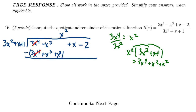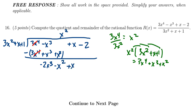Be careful here: you have a negative sign distributing. So negative x cubed minus x cubed combines to give negative 2x cubed. Then, since there are no x squared terms from the numerator, we have 0x squared minus x squared, which gives negative x squared. We bring down the next term — we won't need the negative 2 yet, so we leave it for now.